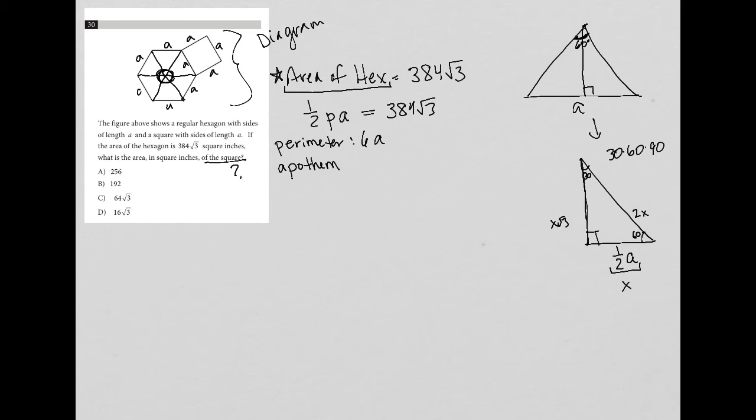Which means my apothem, this height that I'm looking to find, should be 1/2 A, because that's the x part, times √3. So that means my apothem is equal to 1/2 A√3.